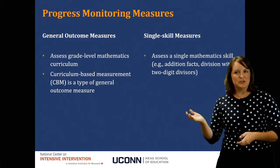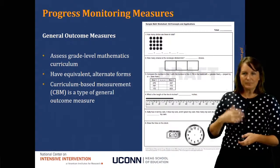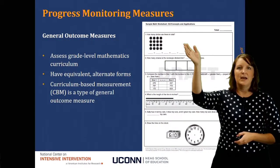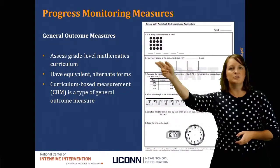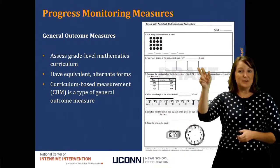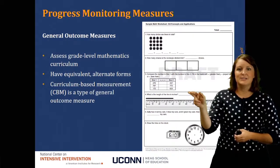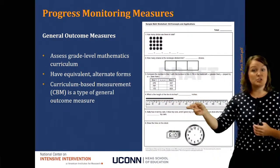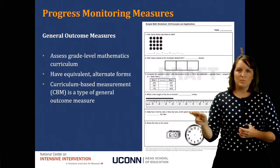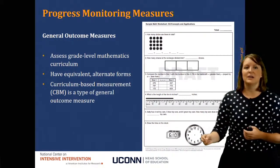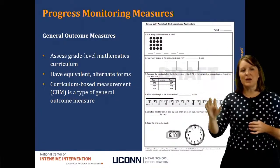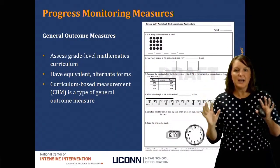Here's an example of a general outcome measure. The first problem asks how many circles are there in all, so the student has to add circles. Another asks how many shares this rectangle is divided into — a fractions or division type question. Another has the student compare different numbers, another has the student measure something like a stick, another is a word problem, and another has the student take digital time and relate it to analog time. This is a general outcome measure because there are lots of different types of mathematics problems.